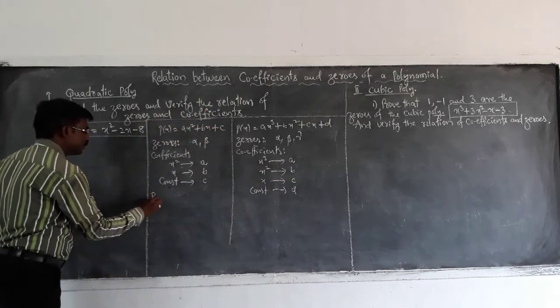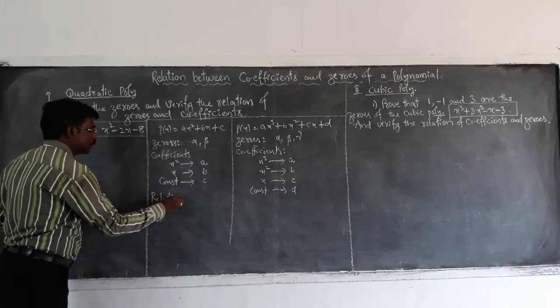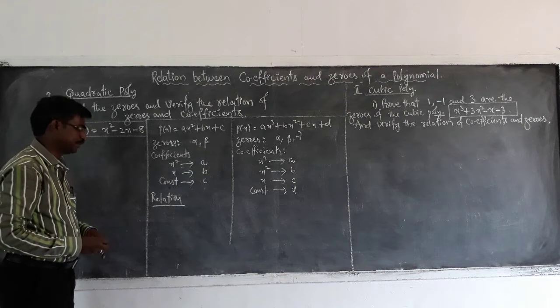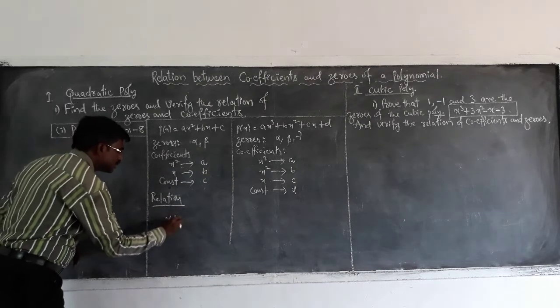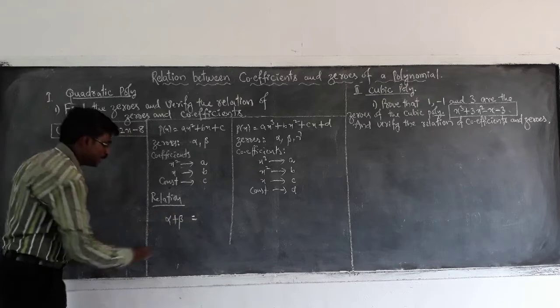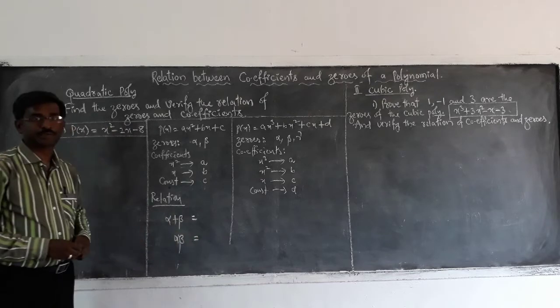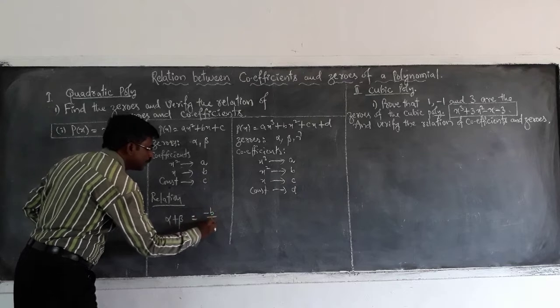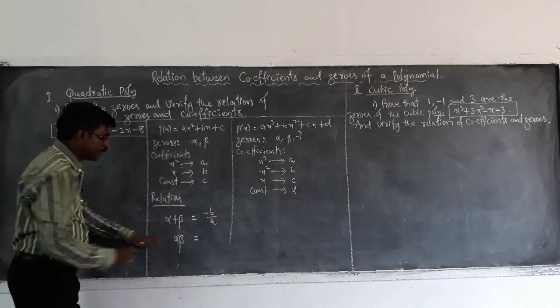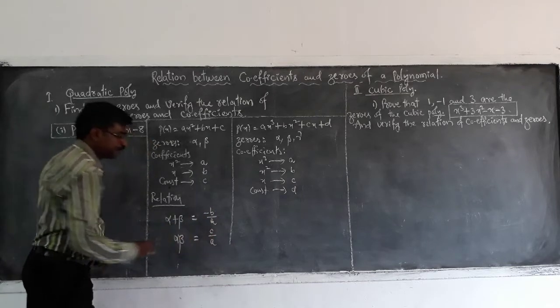Now what is the relation to be verified? Here the relation is sum of the zeros and product of the zeros. So here sum of zeros is minus b by a and product of zeros is c by a.